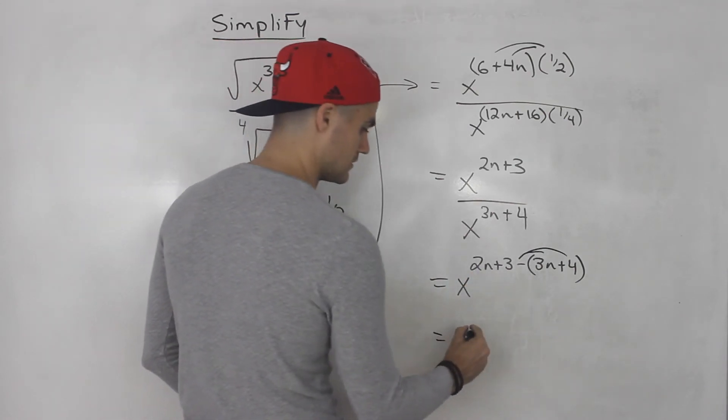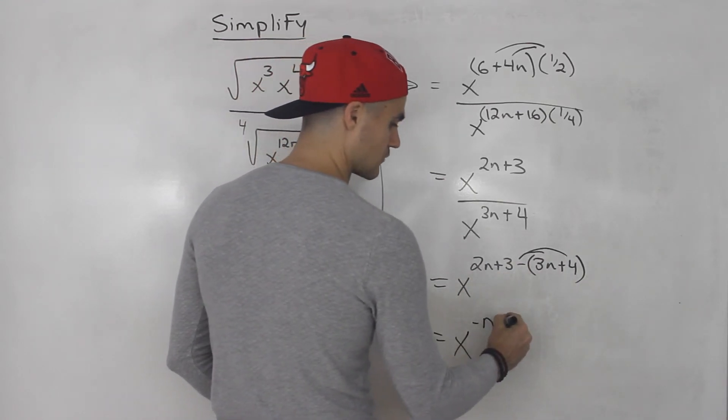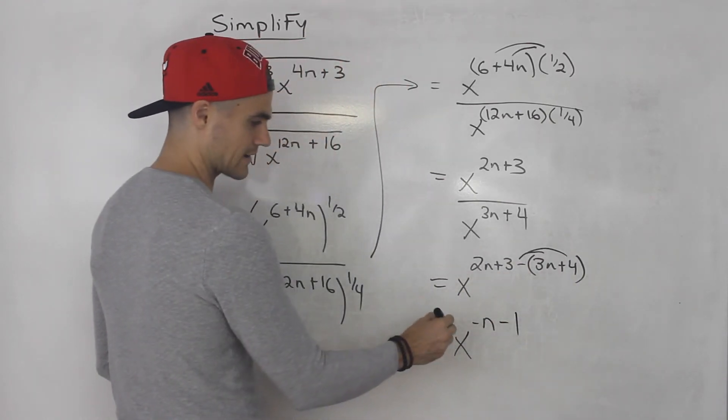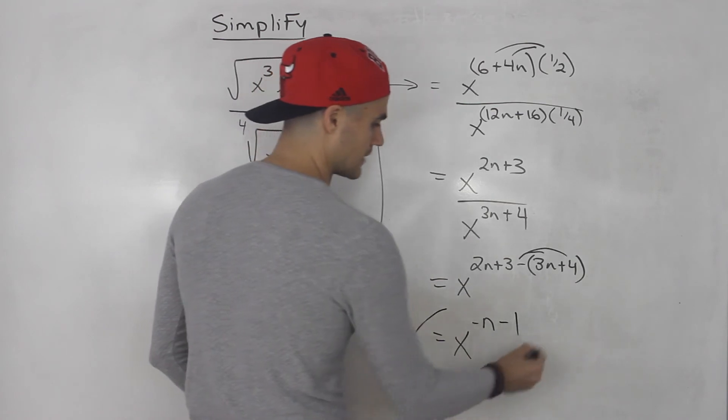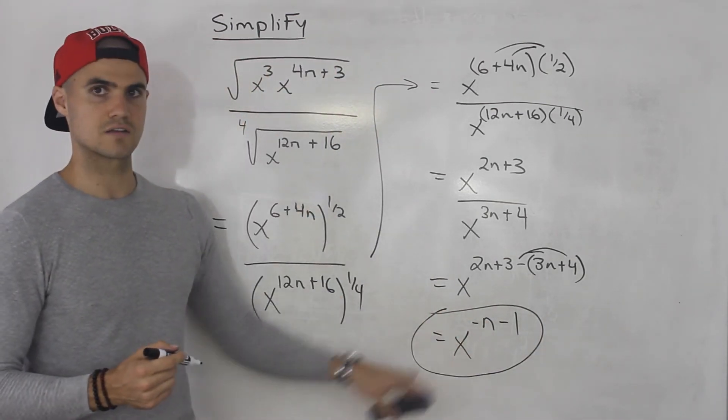So when we distribute that negative inside the bracket, 2n minus 3n gives us negative n. And then 3 minus 4, that gives us negative 1. So x to the power of negative n minus 1. That is the answer. That's what this simplifies to.